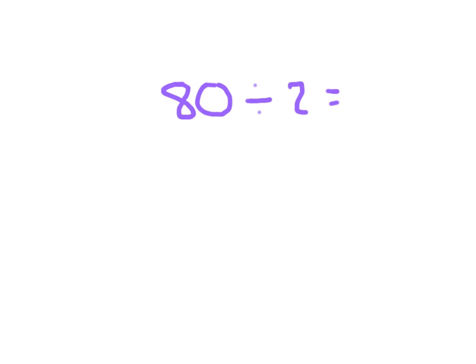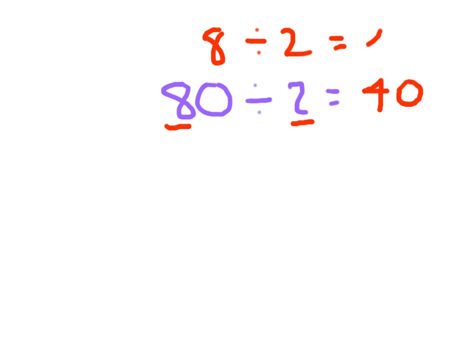Let's look at 80 divided by 2 to start with. We're going to think about what this 8 is worth — this 8 really is worth just 8 tens. So we're saying 8 tens divided into 2 parts is 4 tens, and 4 tens written out is 40. The basic fact that helped us there was 8 divided by 2 equaling 4.